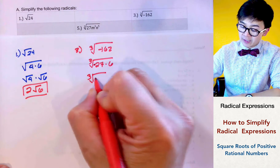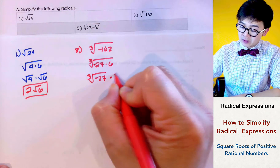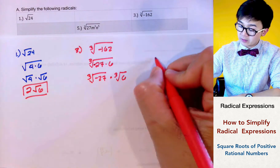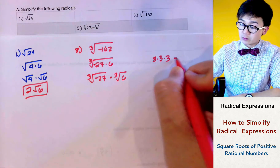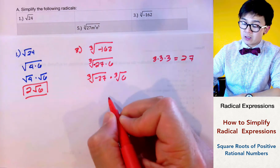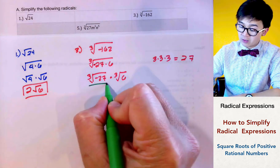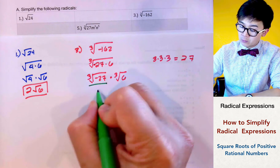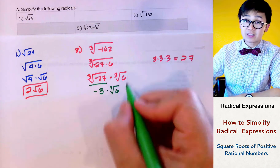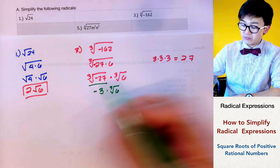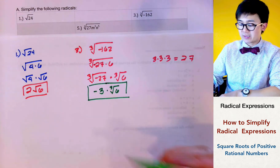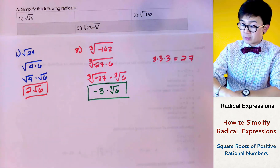Separating the cube root, we have the cube root of negative 27 times the cube root of 6. Since 27 is a perfect cube — because 3 times 3 times 3 equals 27 — and a negative sign can come out of the radical, the cube root of negative 27 is negative 3. Since 6 is not a perfect cube, our final answer is negative 3 times the cube root of 6.